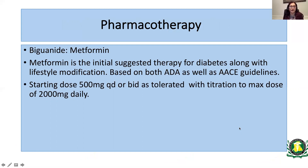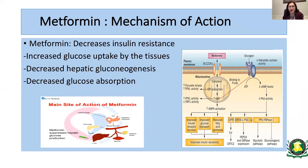Metformin is one of the oldest and most widely used medications for diabetes worldwide, and is the initial suggested therapy for diabetes along with lifestyle modification in both ADA and ACE guidelines. The starting dose is usually 500 mg daily or twice daily as tolerated, with titration to a maximum dose of 2,000 mg. Metformin works at different levels: in the gut it decreases absorption of glucose; in the liver it decreases gluconeogenesis; and in the tissues it promotes increased glucose uptake and utilization.